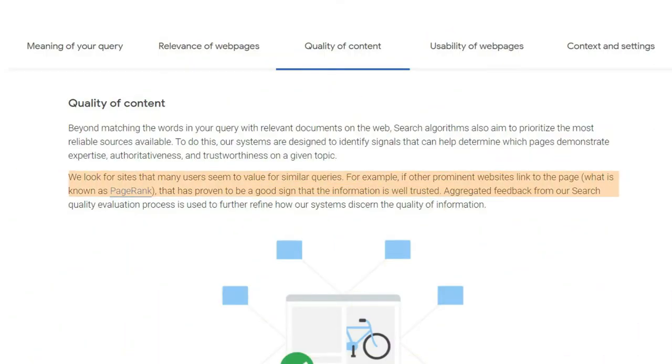Because Google wants backlinks to happen naturally and as said by Google, if other prominent websites link to the page, what is known as page rank, that has proven to be a good sign that the information is well-trusted. This means that backlinks are still very important, but we can expect that Google does take some precautions to recognize spam and link schemes which can result in penalties or removing the site from search. However, this doesn't mean you shouldn't take any action, but you should do link building strategies to increase your domain trust and start increasing your site ranking. Just make sure you follow the best link building practices and do everything by the book.